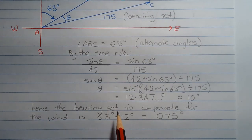Hence the bearing set to compensate for the wind is 63 degrees plus 12 degrees, which is 75 degrees from true north.